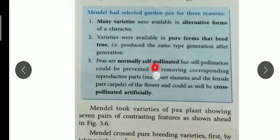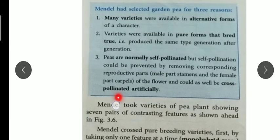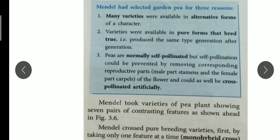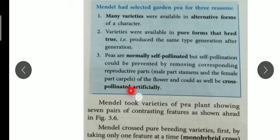One of the main reasons is that the pea plant is a self-pollinated plant. It contains both male and female parts — androecium and gynoecium — so it can pollinate itself and does not need any external agents. Additionally, we can also perform cross-pollination artificially by removing the corresponding stamen or pistil of the plant.